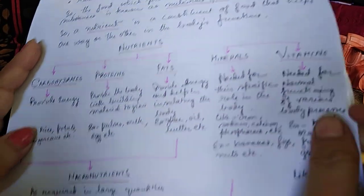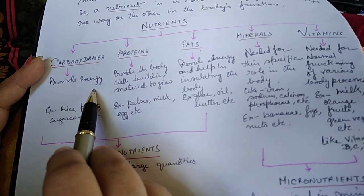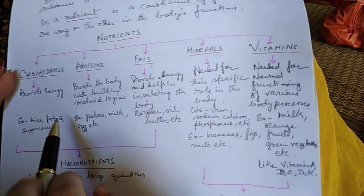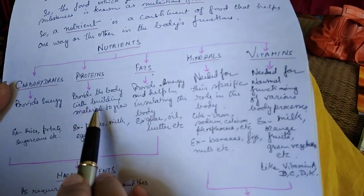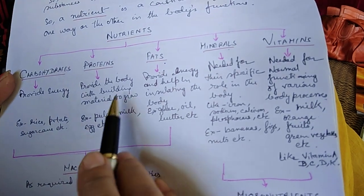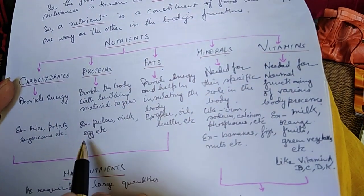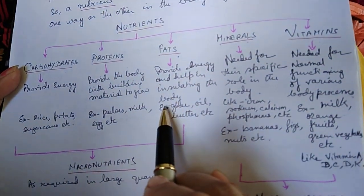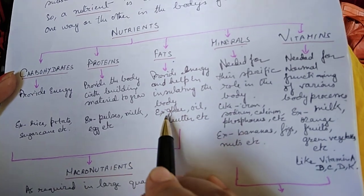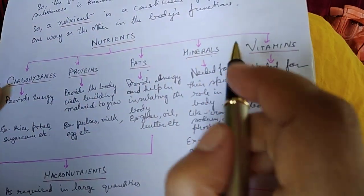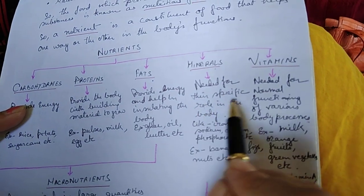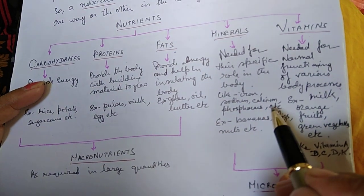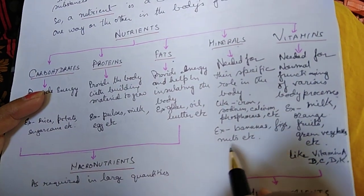Carbohydrates provide us energy; for example, we get them from rice, potatoes, sugarcane, etc. Proteins provide the body with building material to grow; we get them from pulses, milk, eggs, etc. Fats provide energy and help in insulating the body; we get them from ghee, oil, butter, etc. Minerals are needed for their specific role in our body — like iron, sodium, calcium, phosphorus — and we get them from bananas, figs, nuts, etc.